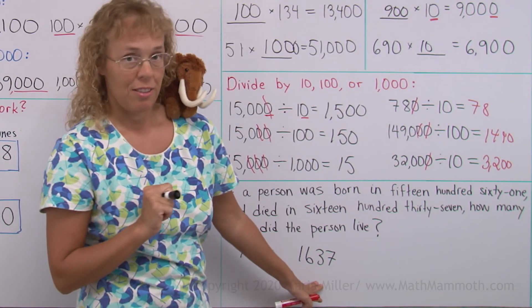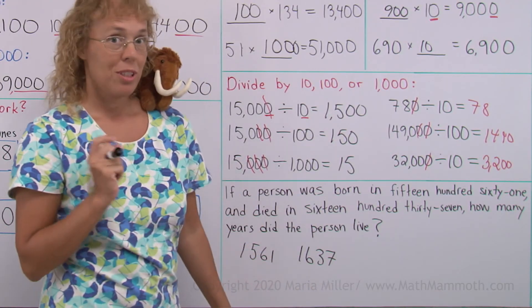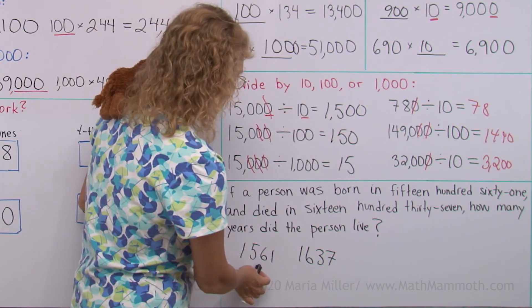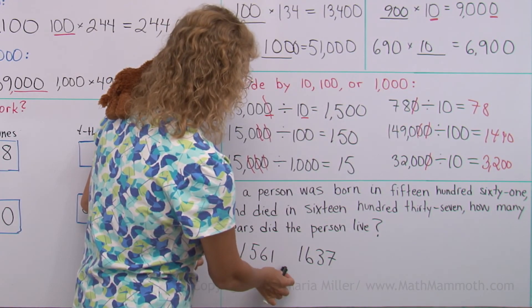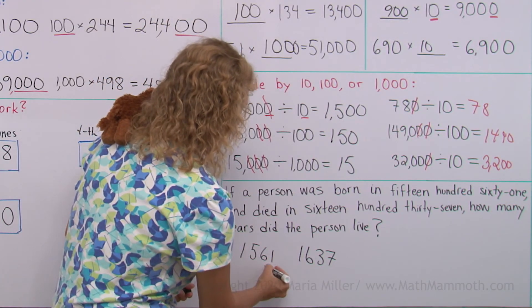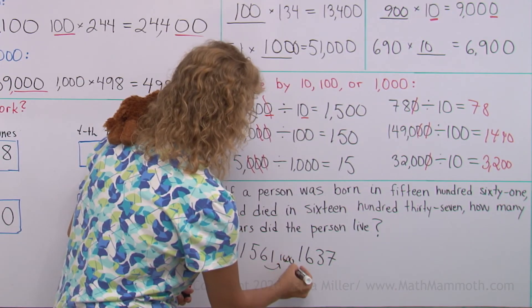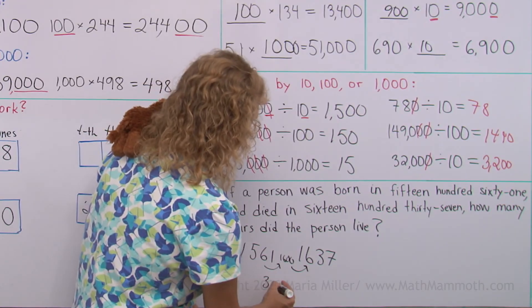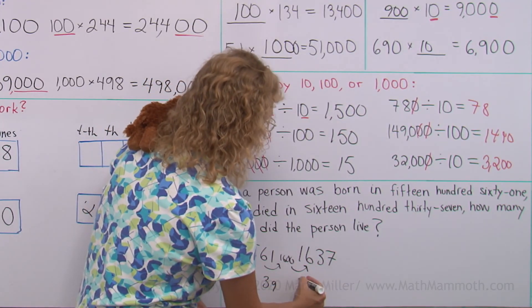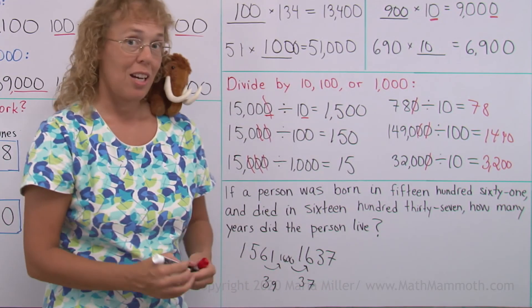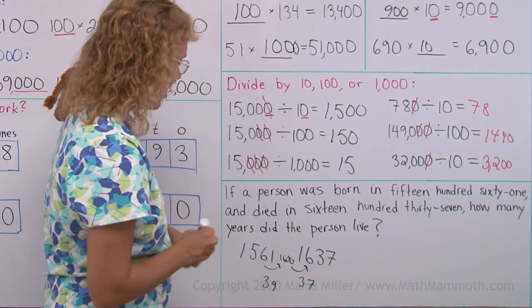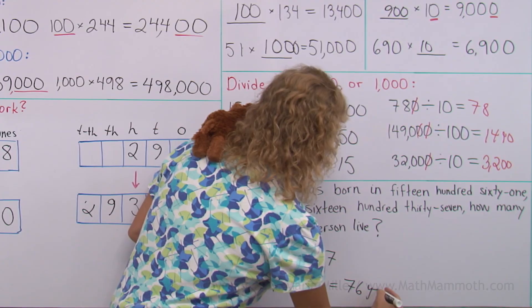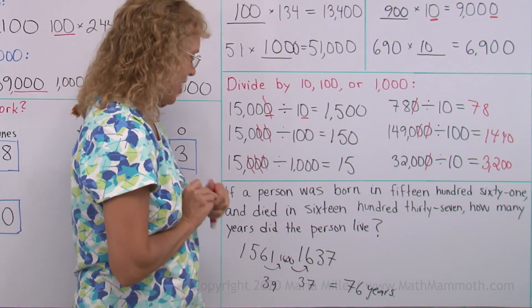You could subtract or you can figure it out mentally, however you want. From here to 1600, if I think going from here to 1600, kind of like in two steps, then this difference here is 39 years. And then, of course, from here to here is 37 years. And now I add those, so we get 76 years. Okay, so they lived a nice long life.